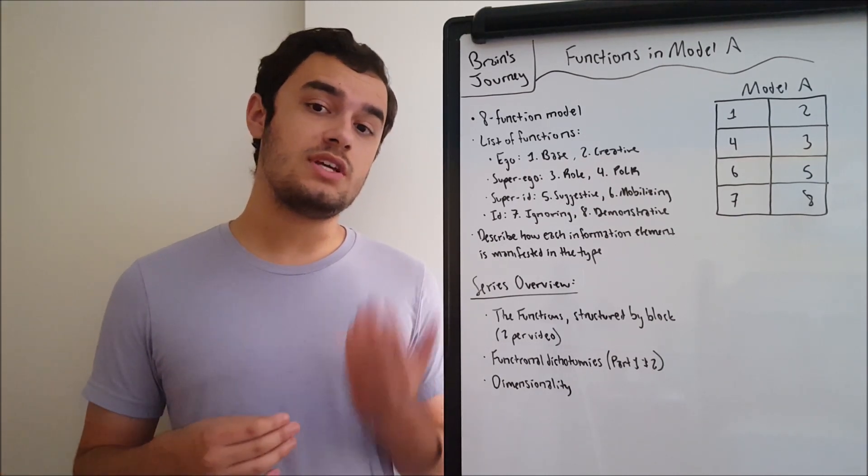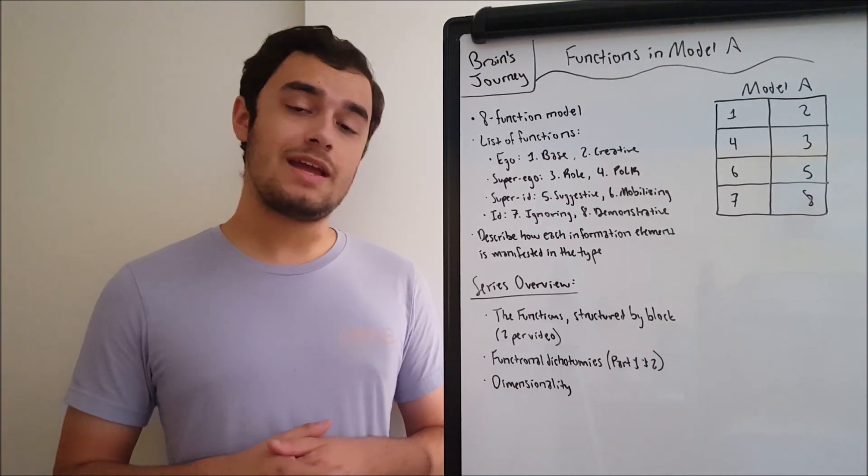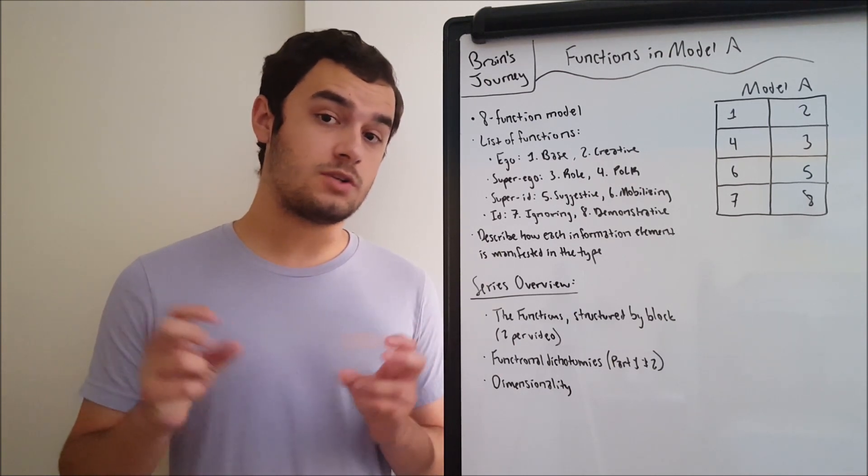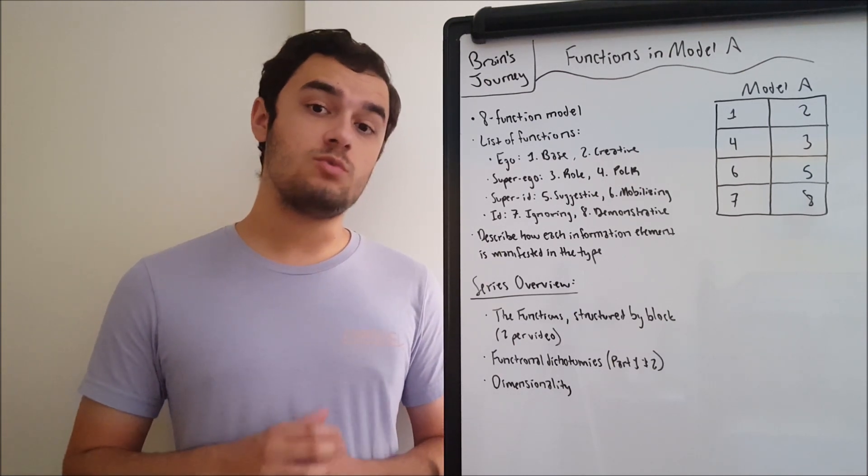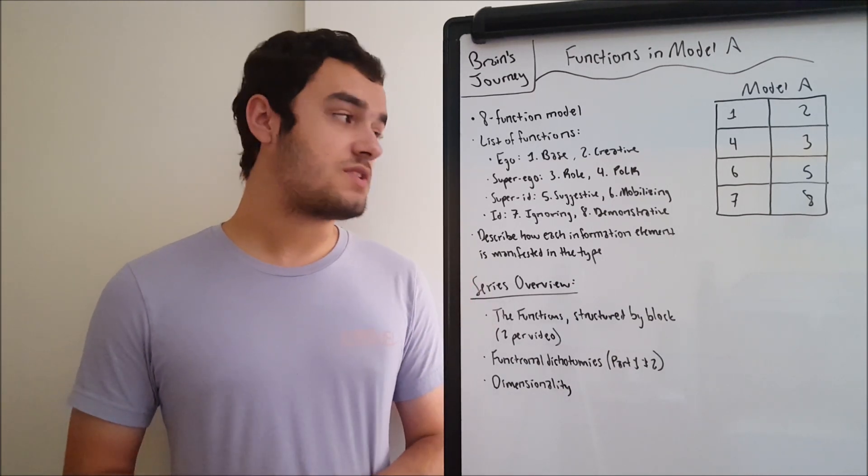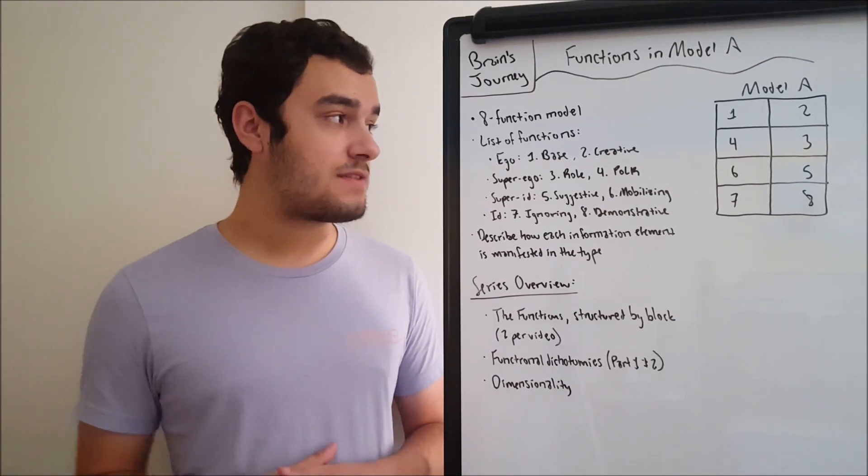With the last series, it was easier to illustrate the differences between the Myers-Briggs and Socionics because the information elements are labeled in mostly the same way as the cognitive functions of the MBTI and Western typology. But here, there is a different story because the functions here are much different, their properties are much different, and they manifest very differently.